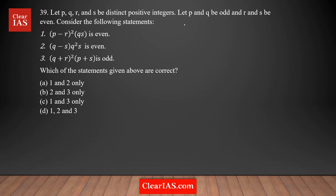There are also rules for addition and subtraction. Adding two even terms always gives an even result. Adding two odd terms — for example, one plus three — gives an even result. Adding one odd number and one even number gives an odd result.